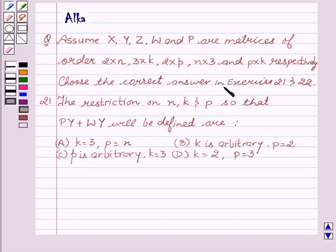Choose the correct answer in exercise 21 and 22. Exercise 21 is the restriction on N, K and P so that PY plus WY will be defined.